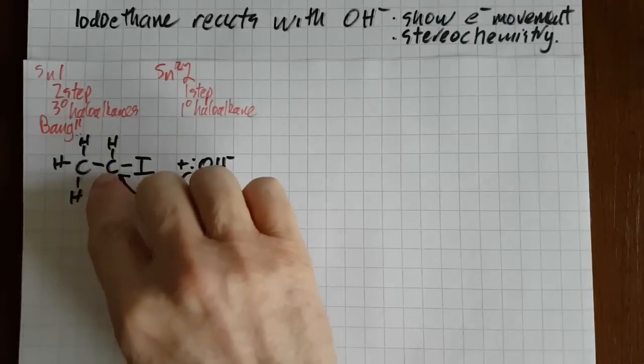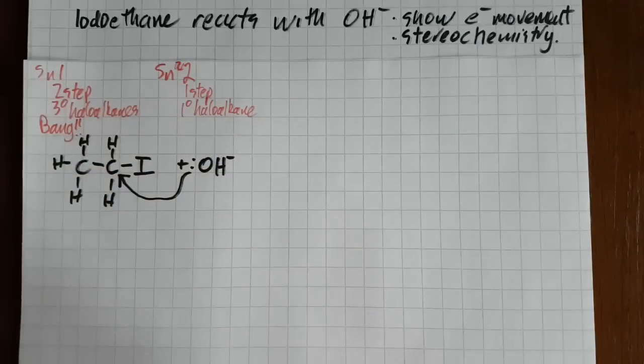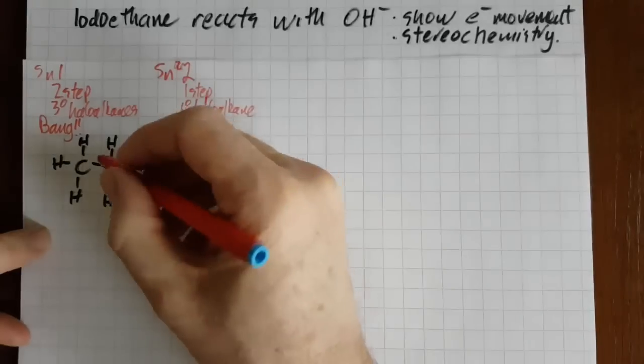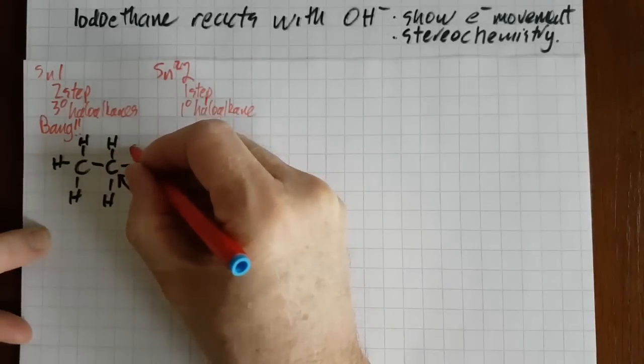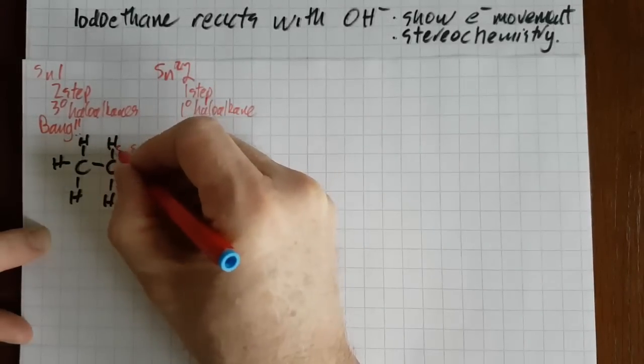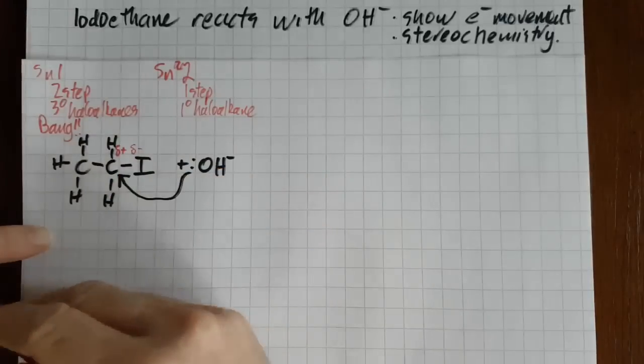Now why does it choose to go to this carbon atom as opposed to any other atom? Well if you recall, iodine is more electronegative than carbon so it's going to have a slightly negative charge, leaving this carbon here with a slightly positive charge.